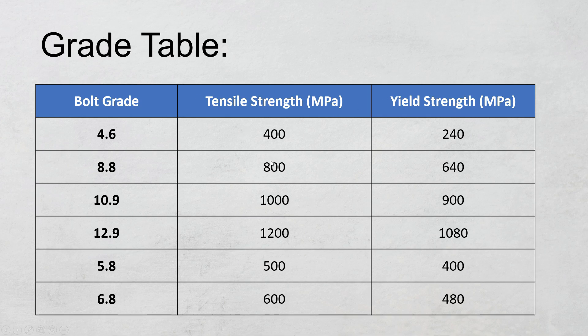As this number increases, their tensile strength and yield strength will also increase. For example, 4.6 has a tensile strength of 400 and yield strength of 240, while the 12.9 bolt has 1200 tensile strength and 1080 yield strength.